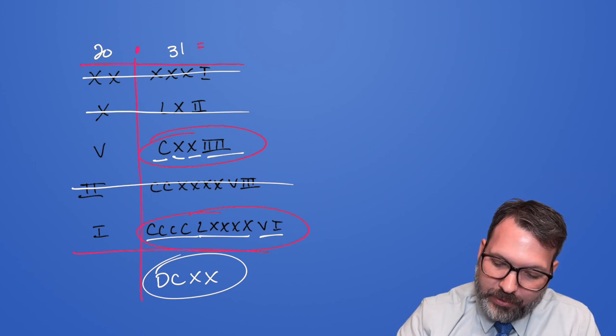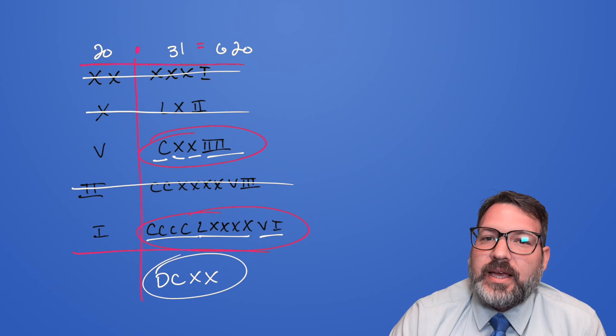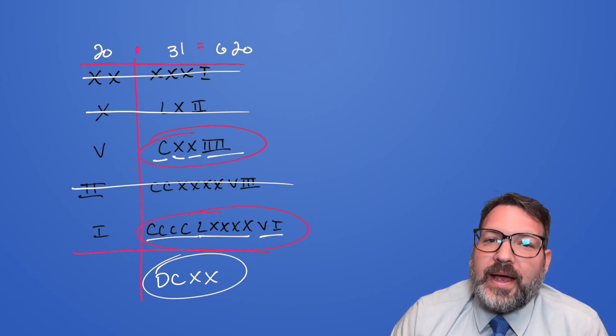In our place value decimal number system, of course, that would be 620. I guess it's truly like they say, when in Rome, multiply as the Romans do.